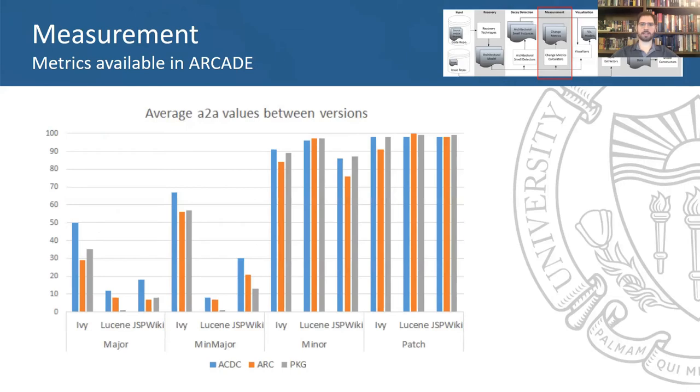As an example of applying the measurement task, here is a chart displaying the average A2A values between versions for the major, min-major, minor, and patch versions of Ivy, Lucene, and JSP wiki.